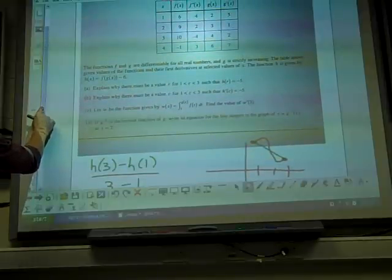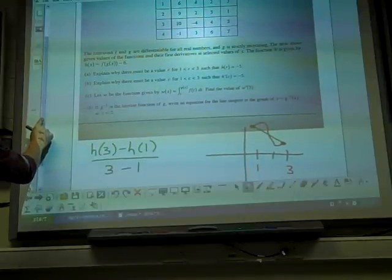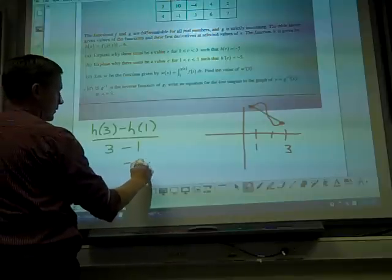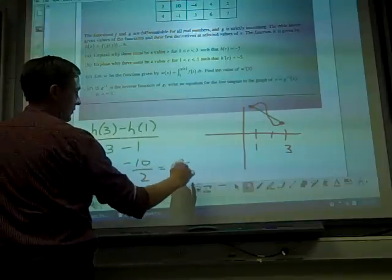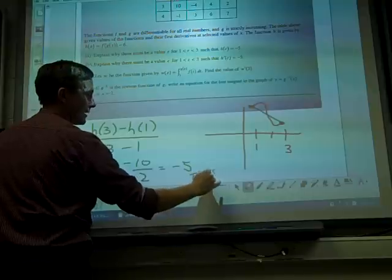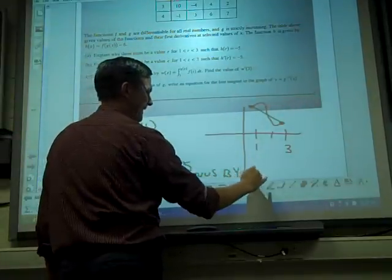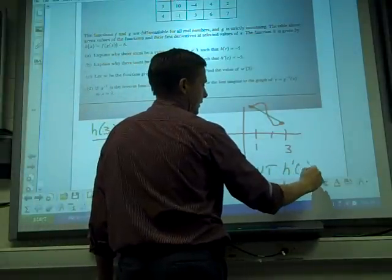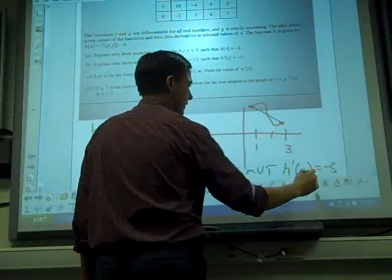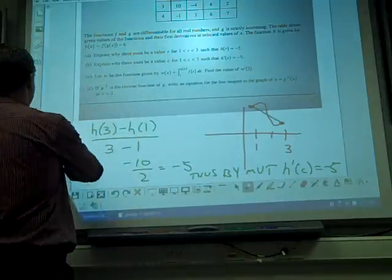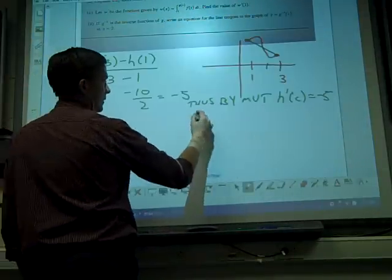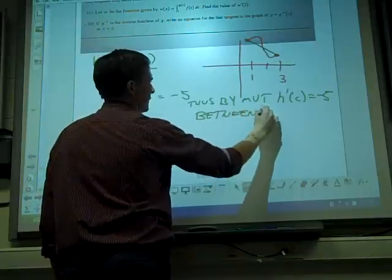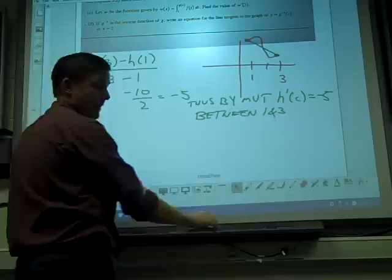That would be easier. That would be a lot easier. Let's look at the table. Negative 7 minus 3, so you have negative 10 over 2. Negative 10 over 2, which is negative 5. Thus, by mean value theorem. Oh my gosh. It's so easy. Thus, by mean value theorem, h prime of c equals negative 5 between 1 and 3. That would be the mean value theorem.